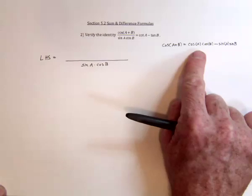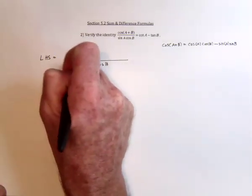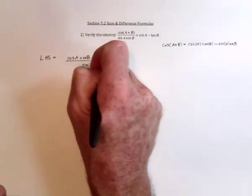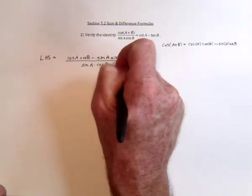And then use this formula for the numerator. So we'd have cosine of a and cosine of b minus sine of a and sine of b.